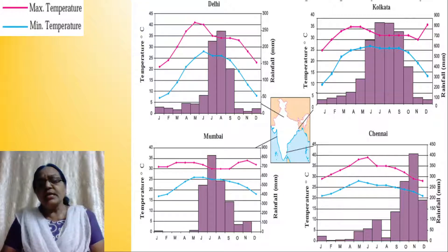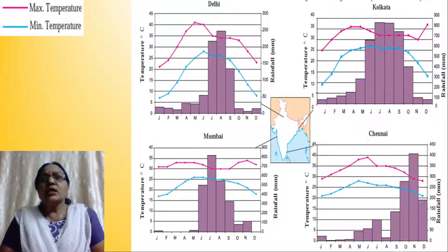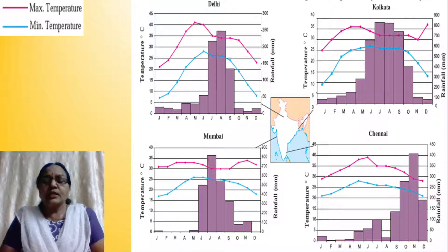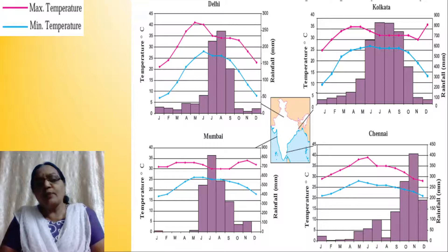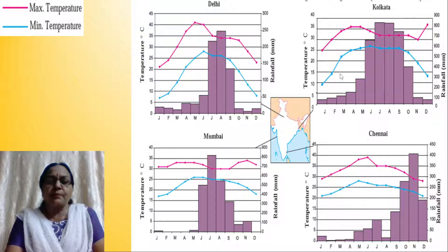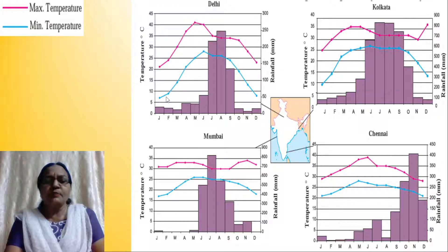Delhi is centrally located and as such it is far away from the influence of the sea. The rainfall is given in millimeters and shown by means of a histogram. The pink line graph shows the maximum temperature and the blue line shows the minimum temperature.